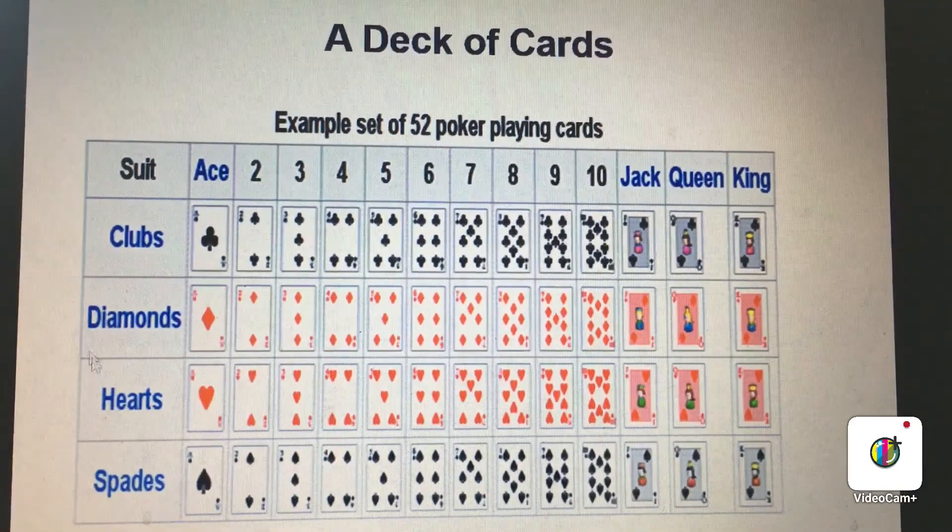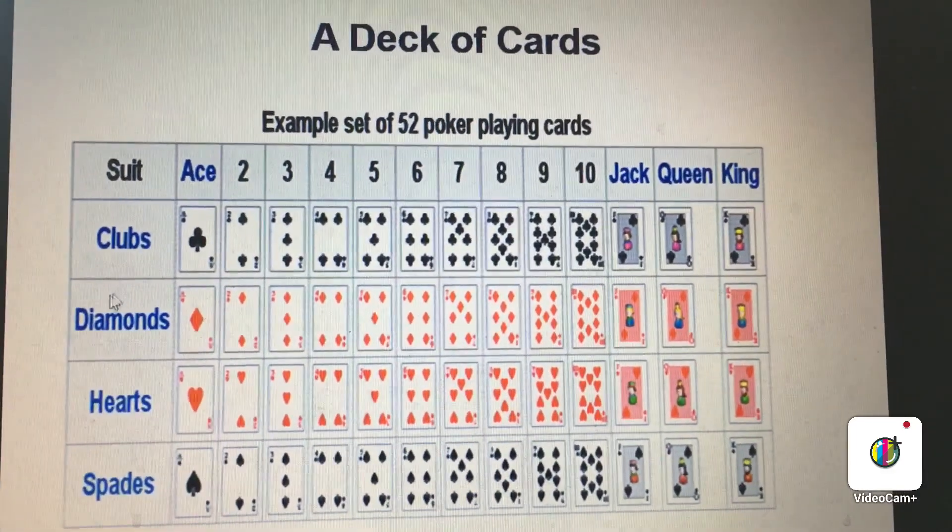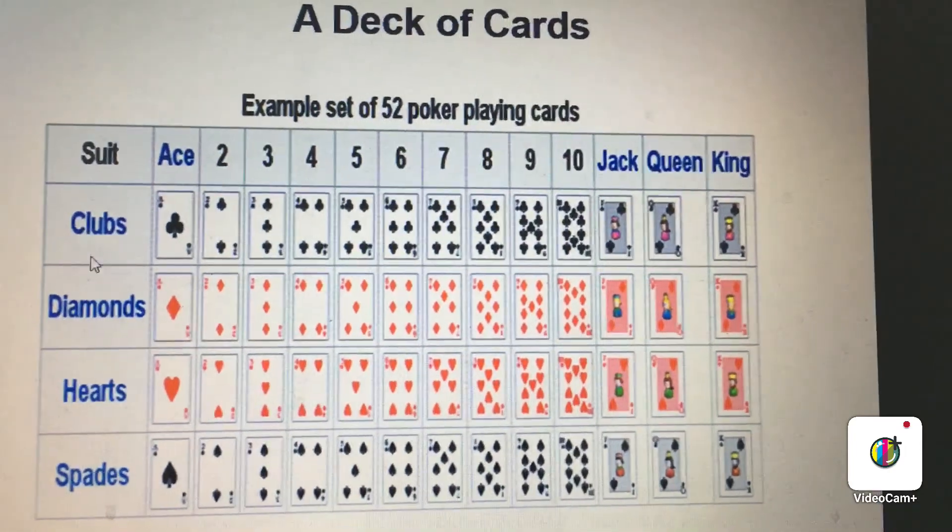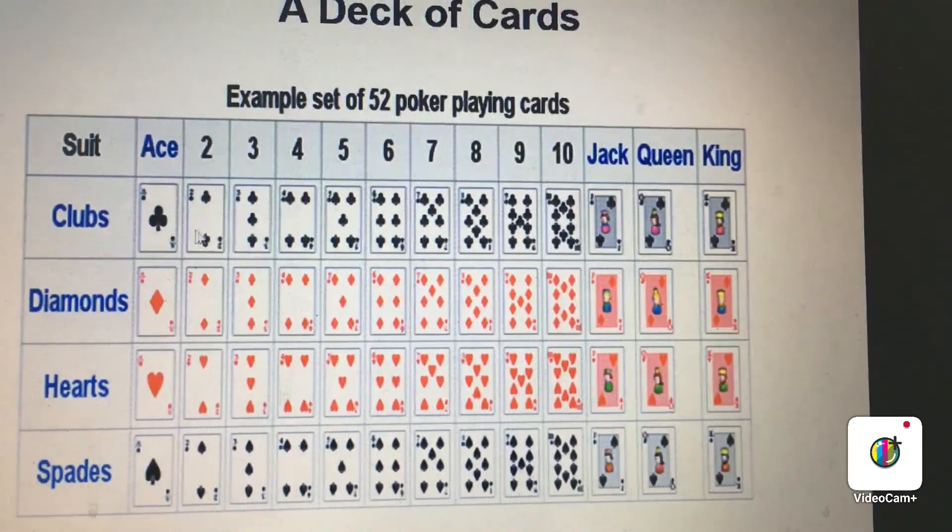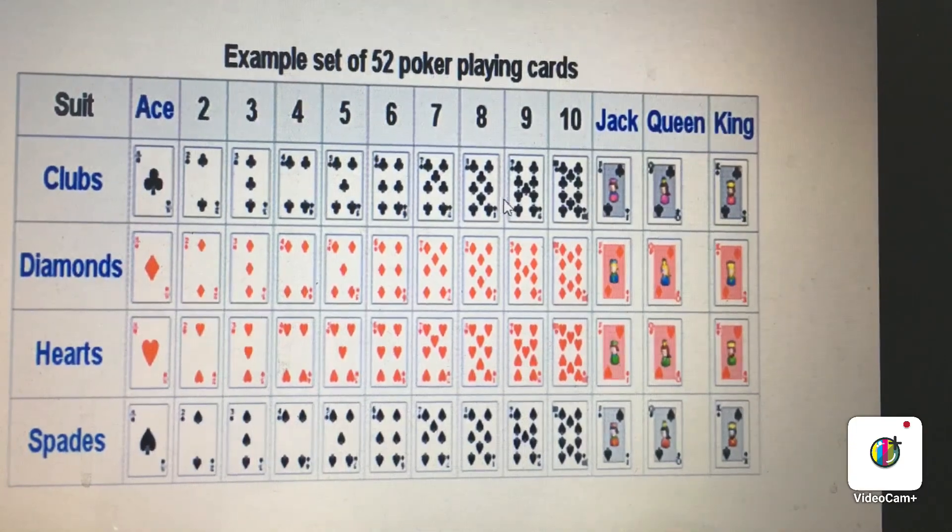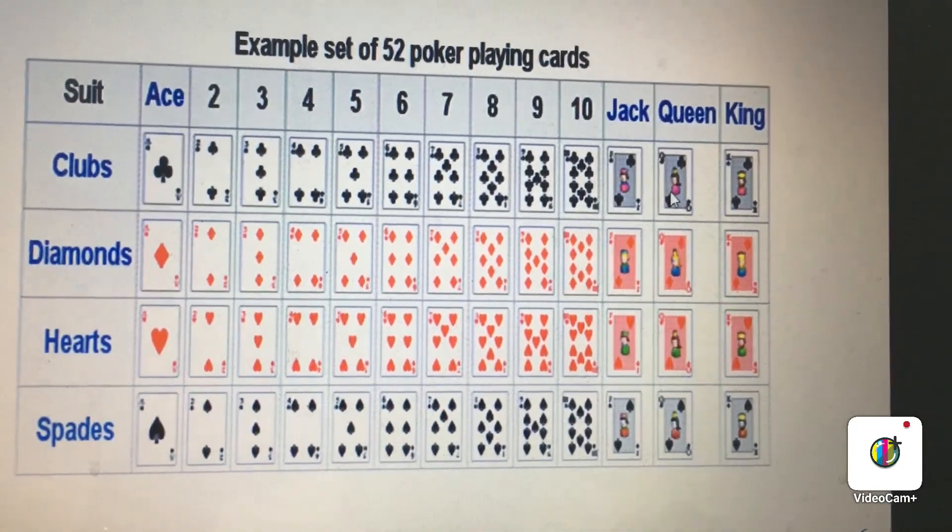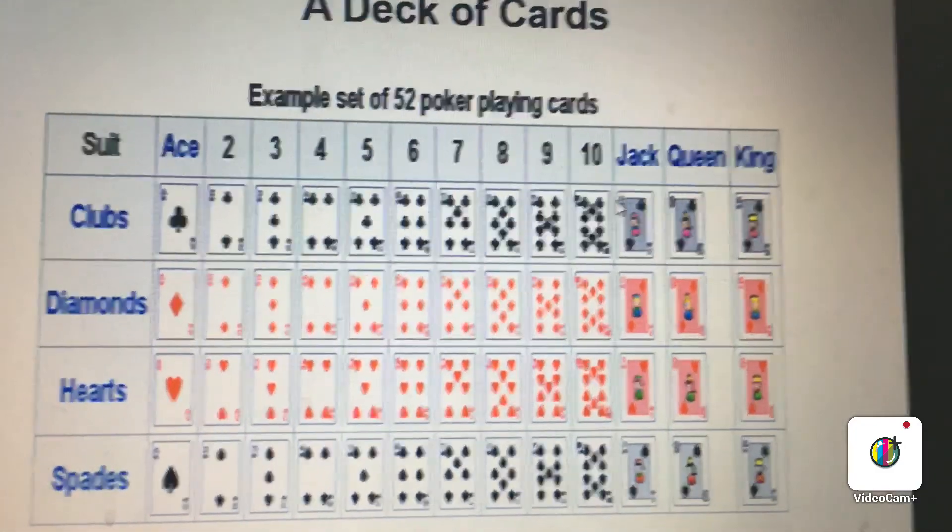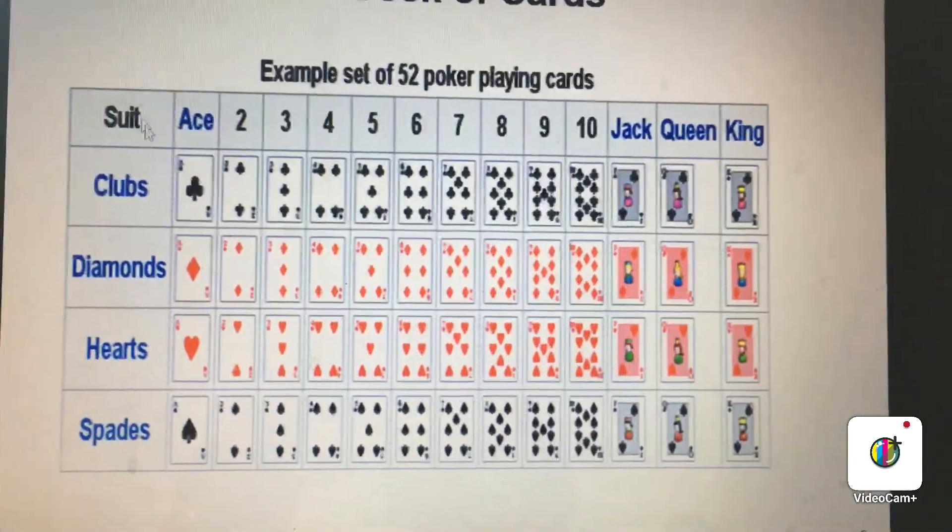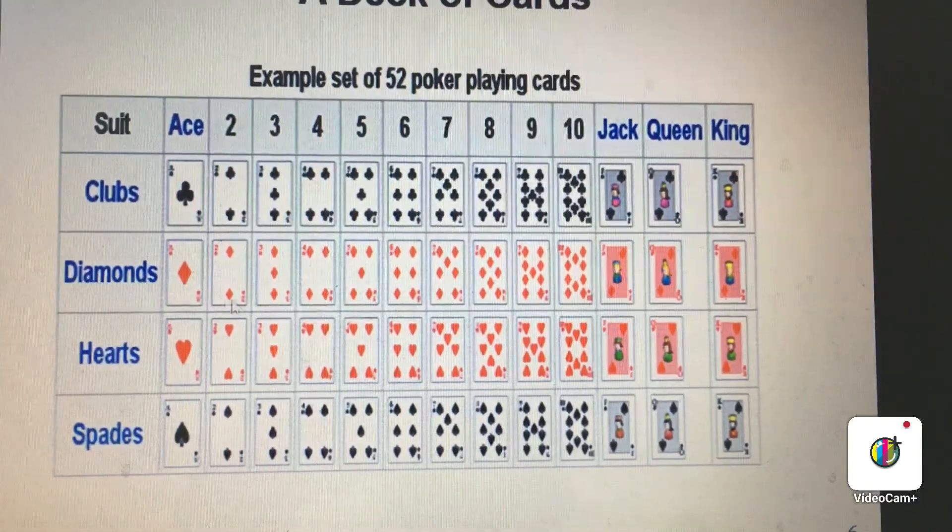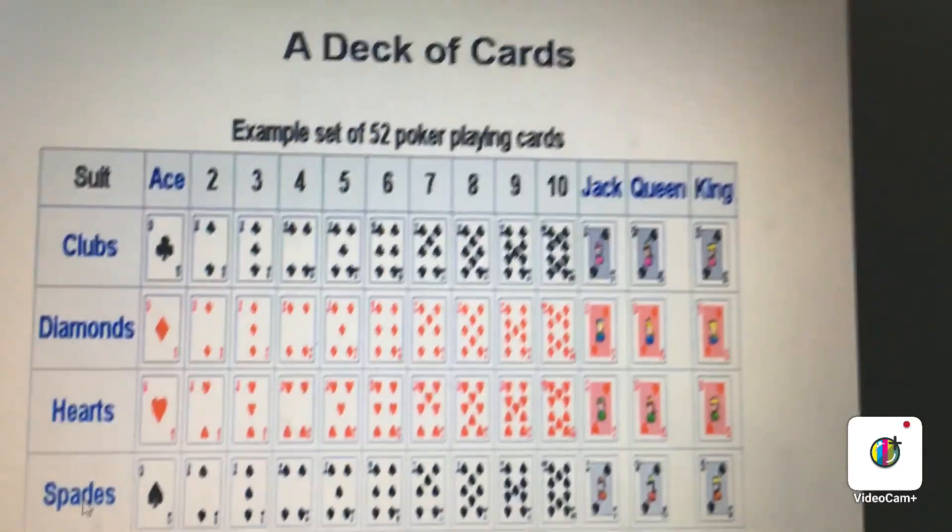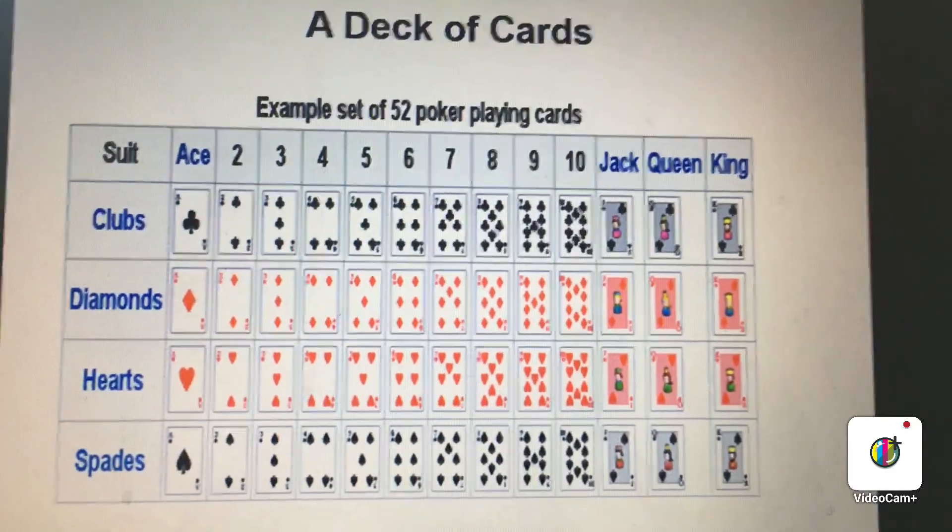These are the suits. They have four suits: club, diamond, heart, and spade. Then each suit has how many cards? Look at this. Let's say club. How many cards in club? 1, 2, 3, 4, 5, 6, 7, 8, 9, 10, 11, 12, 13. So each of the suits have 13 cards. The clubs have 13 cards, the diamond has 13 cards, the heart has 13 cards, the spade has 13 cards. With this information, we are ready to answer the question.